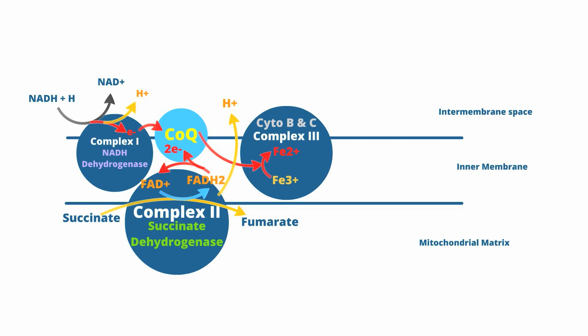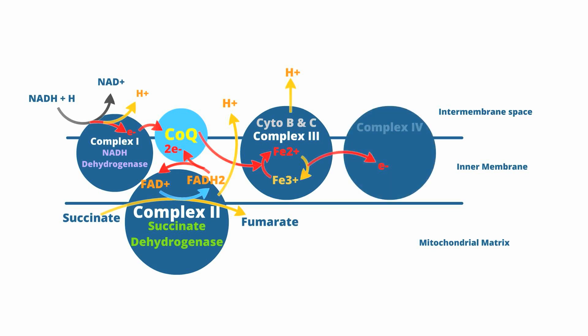Complexes 3, 4, and 5 all contain a heme group. As the electrons are passed from one complex to another, the ferric atom of the heme group is converted to a 2+ ferrous state. As the electrons pass from complex 3, otherwise known as cytochrome B and C, these electrons are transported to complex 4, otherwise known as cytochrome A and A3. Complex 4 is the only complex that interacts with oxygen. In doing so, the electrons reduce the oxygen atom to H2O, or water. This is a key point because oxygen is the final electron acceptor of the ETC to produce water.